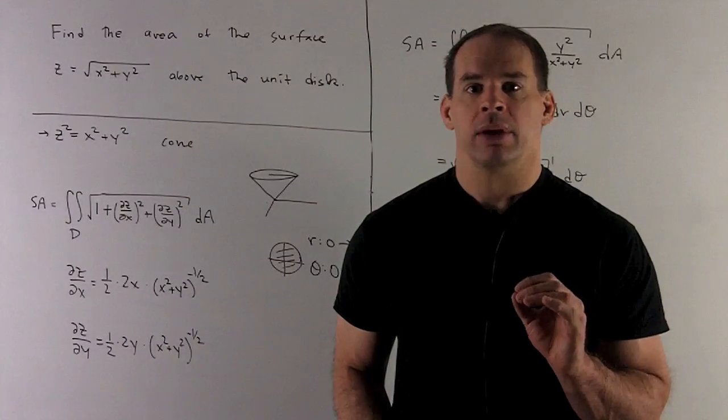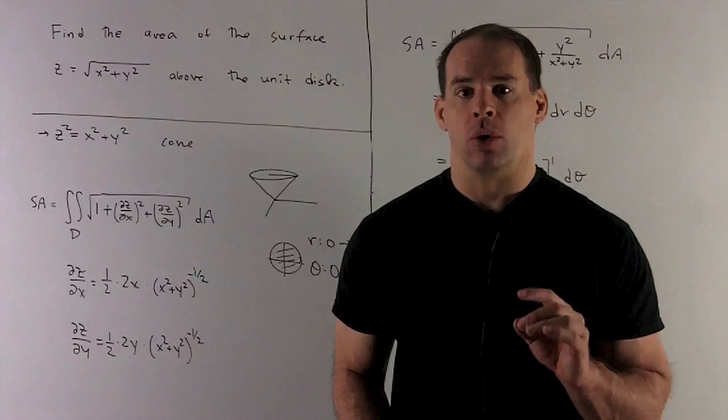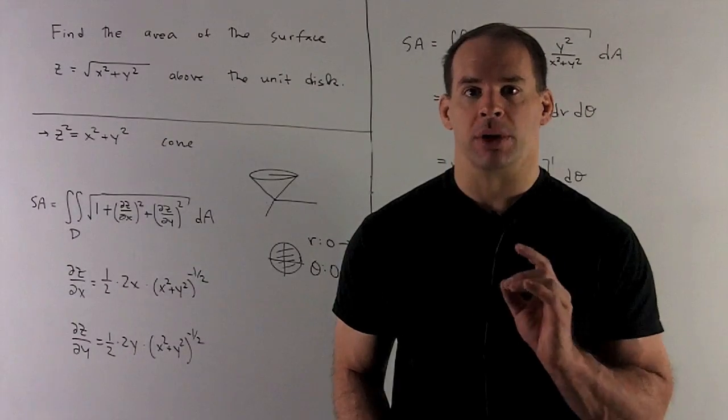Same idea. Partial z with respect to y, we get y over square root of x squared plus y squared.